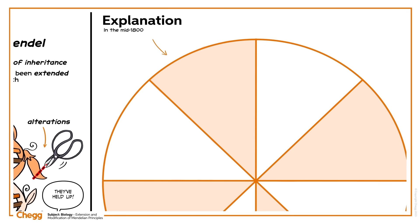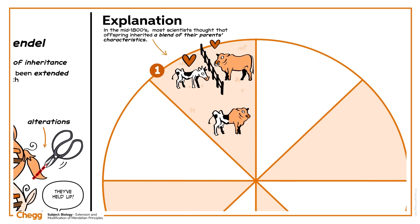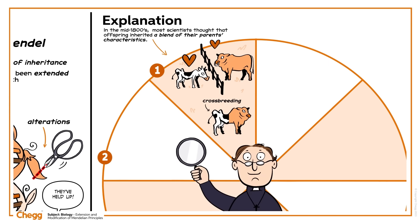In the mid-1800s, when Mendel was alive, most scientists thought that offspring inherited a blend of their parents' characteristics. Farmers had centuries of experience in crossbreeding, and it seemed that offspring's characteristics were intermediate forms of their parents. Mendel tested this theory with a scientific approach, using model systems.